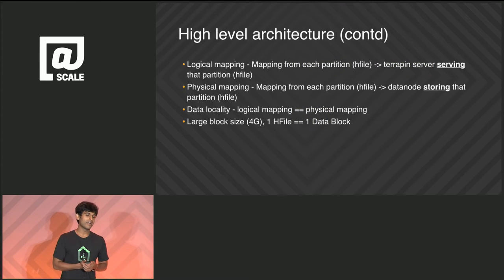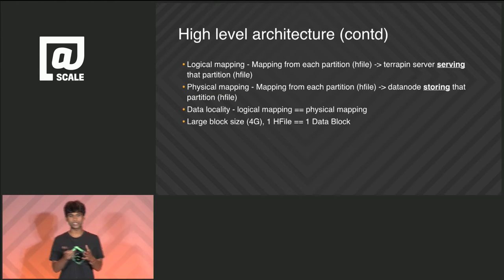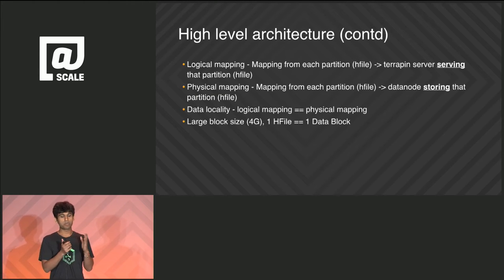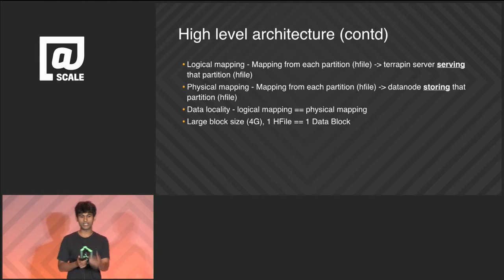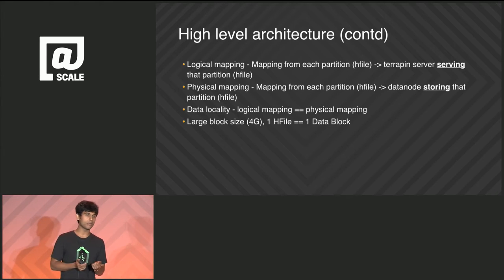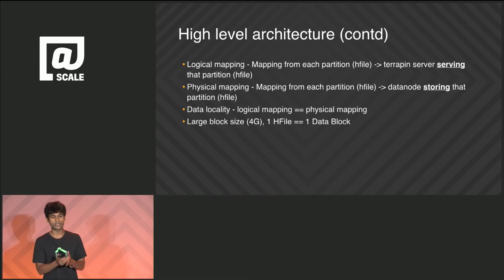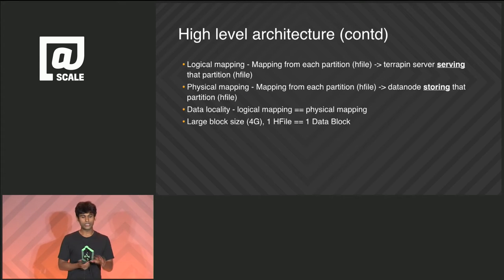At any point in time there are two mappings. There's a logical mapping — from each partition to the Terrapin servers serving it. And there's a physical mapping from HDFS data nodes. Data locality means the logical mapping should converge to the physical mapping — that's the job of the controller. This is possible because we're dealing with immutable datasets on HDFS, and HDFS is the only source of truth for data location. With HBase, the region server handles in-flight writes while immutable HFiles are distributed by HDFS, making it harder.